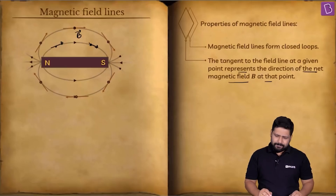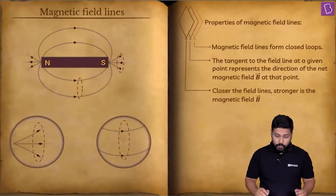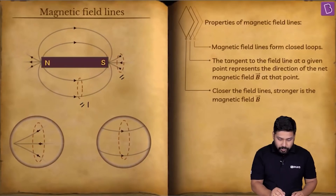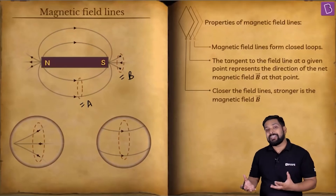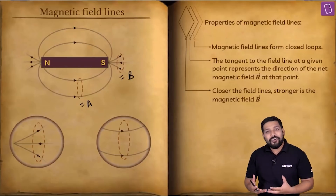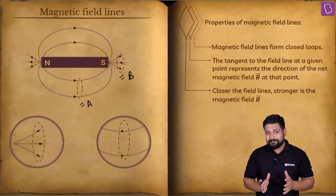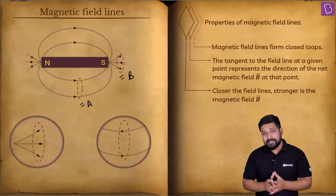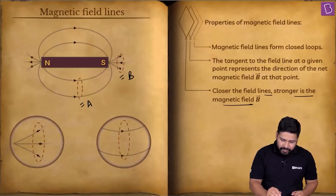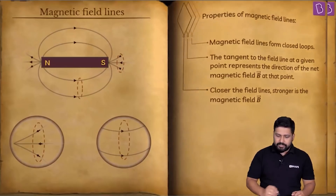The next property: comparing magnetic field intensity at two locations A and B — where the field lines are closer together, the magnetic field intensity will be higher, and where the lines are farther apart, the magnetic field intensity will be lesser. So, closer the field lines, stronger the magnetic field. The magnetic field at point B, where lines are denser, is more.